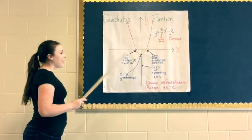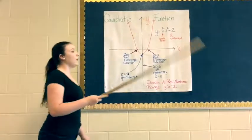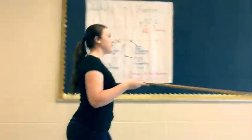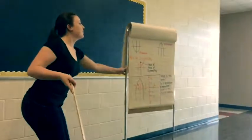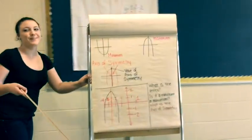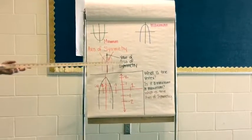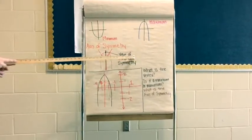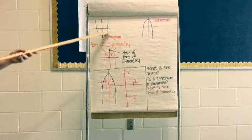As you can see, there's also a different type. You have the maximum and a minimum. The value of the axis of symmetry is always going to be through the middle.